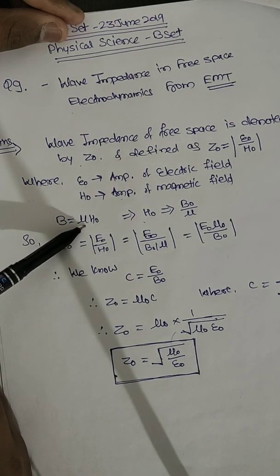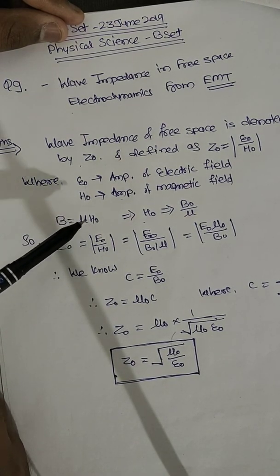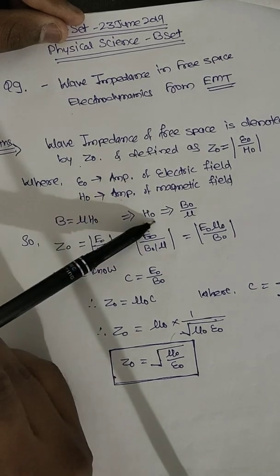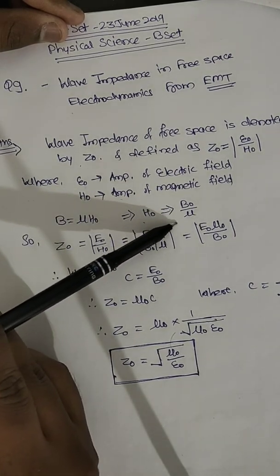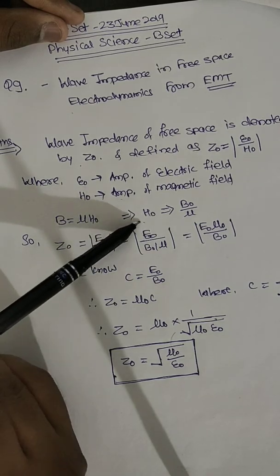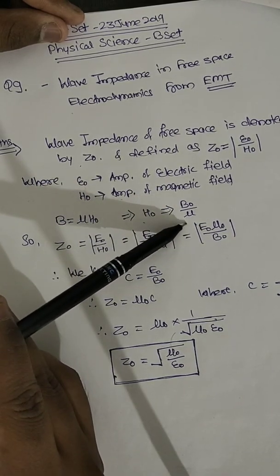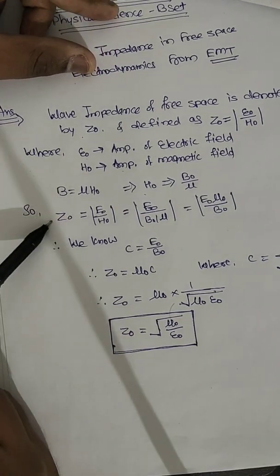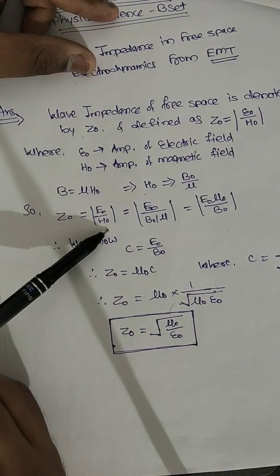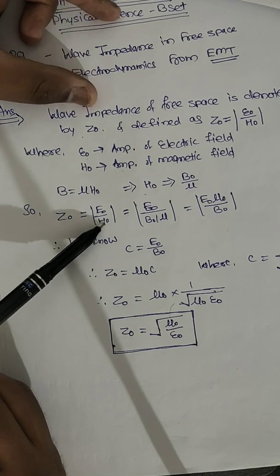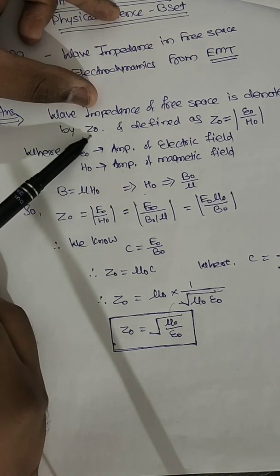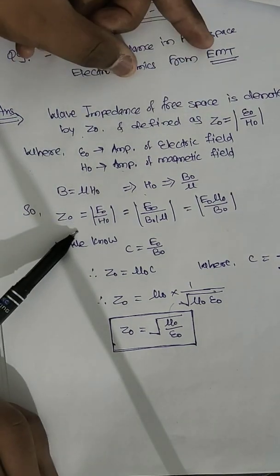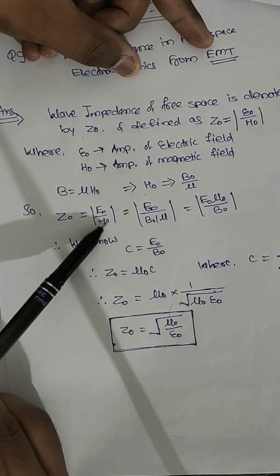We have that B0 = mu times H0, so H0 = B0 upon mu. Therefore, impedance is equal to E0 upon H0. The wave impedance in free space is Z0 = E0 upon H0.